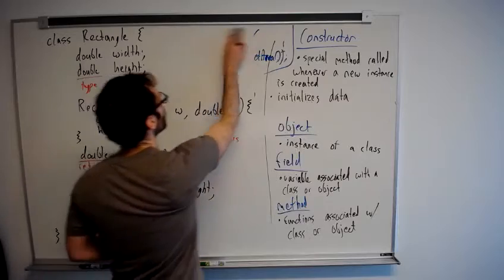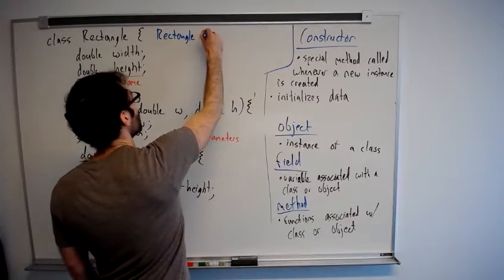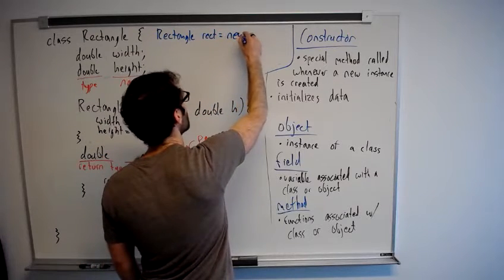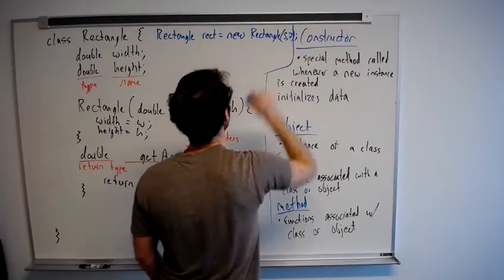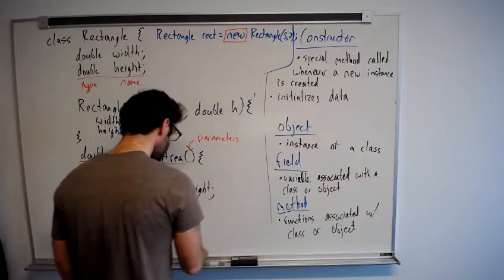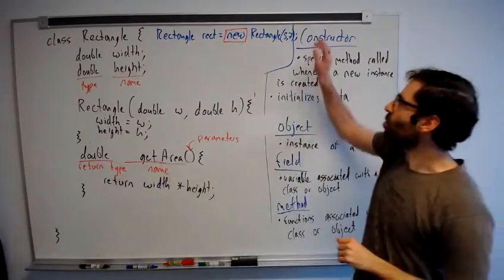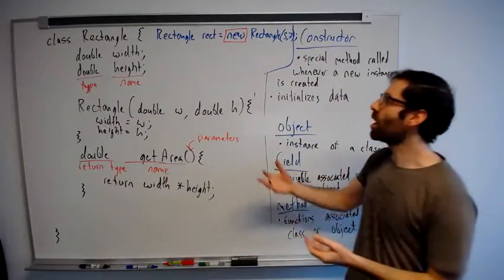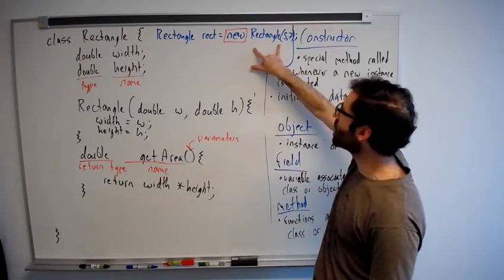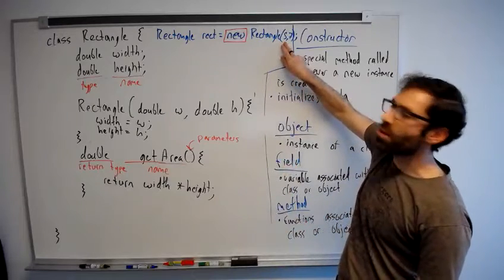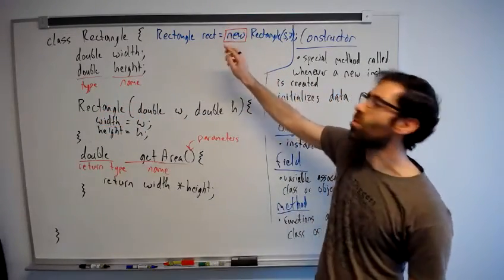Before we would be able to print out the area of a rectangle, we would write: rect equals new Rectangle(5, 7). And here we're using this special Java keyword 'new' as part of a statement that creates a new instance of a class, that creates a new object. And in this case we're both declaring this variable rect to be of type Rectangle and also giving an initial value which is a new instance of the Rectangle class with a width of five and a height of seven. So this is how this constructor gets used with this new keyword.